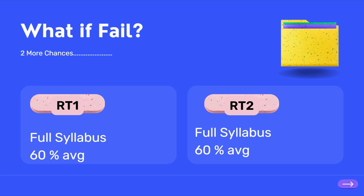If RT1 is not successful, you will be scheduled for RT2. You'll receive a mail from their team informing you that RT2 has been scheduled because of your marks. Same criteria apply — full syllabus and 60% average. Most people go through to the RTs but after that they do succeed, so it's not that difficult.